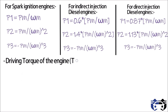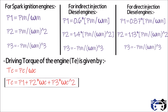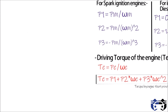The driving torque of an engine te is given by te equals p divided by omega e. Substituting the power performance polynomial, we get te equals p1 plus p2 times omega e plus p3 times omega e squared. This is the torque produced by the engine that delivers power pe at a particular angular velocity.